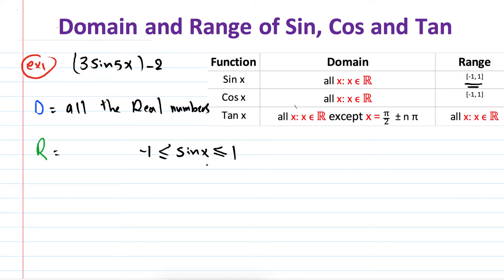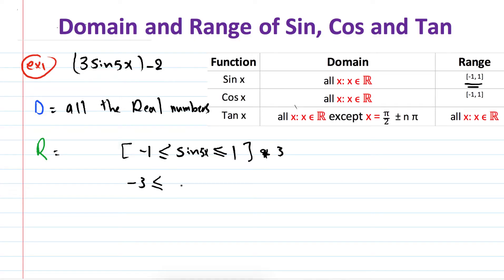Evaluating different x values into sine does not change the range, so I can replace sine(x) with sine(5x): -1 ≤ sine(5x) ≤ 1. Now I have 3 sine(5x), so I multiply everything by 3: -3 ≤ 3 sine(5x) ≤ 3.